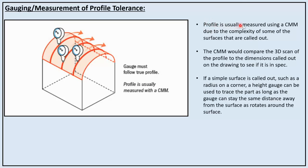Profile is usually measured using a CMM due to the complexity of some surfaces. The CMM compares the 3D scan of the profile to the dimensions called out on the spec drawing to verify conformance. If a simple surface is called out, such as a radius on a corner, a height gauge can be used to trace the part as long as the gauge can maintain the same distance from the surface as it rotates around.